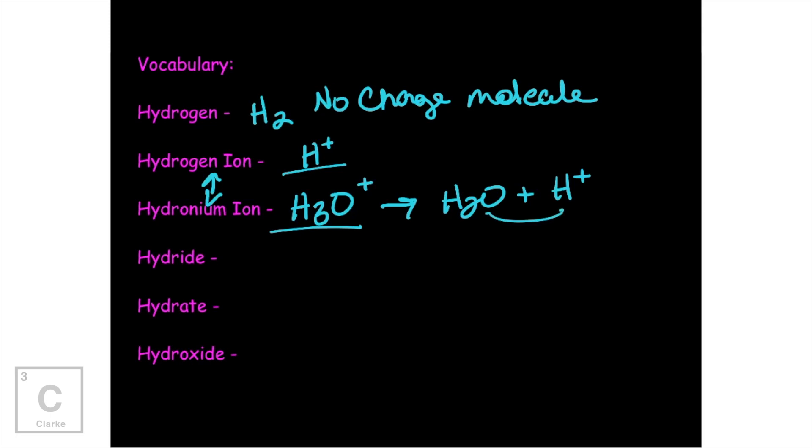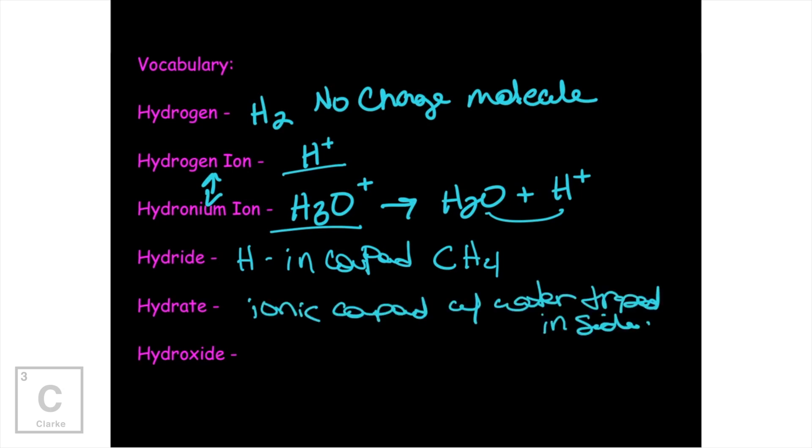Now we have hydride. When we say hydride, we know that that hydrogen is in a compound. Like if we said carbon tetrahydride. Hydrate. Remember us talking about hydrates once upon a time? Hydrates meant that we had an ionic compound with water trapped inside. And then hydroxide, that's just the hydroxide ion. I wanted to make sure that I just kind of hit on all of those words because they do look and sound very similar. Okay.